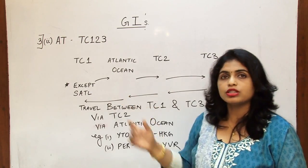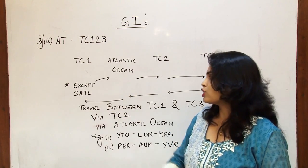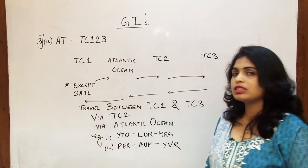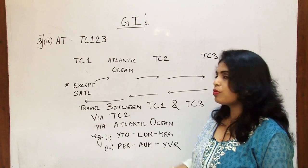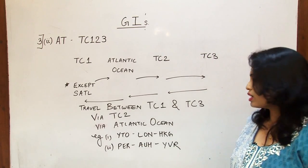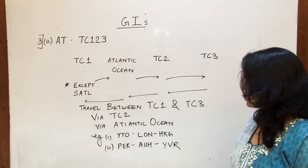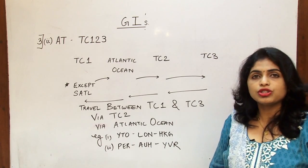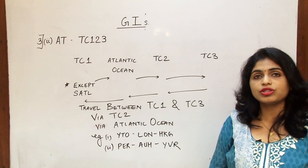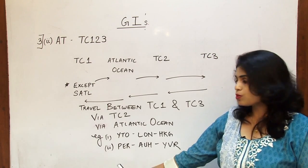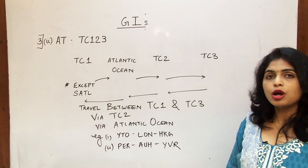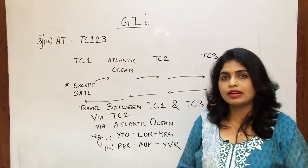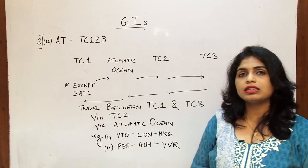So AT applies when traveling between TC1 and TC3 with a via point at TC2 and via the Atlantic Ocean. Examples here are Toronto (YTO, Canada, Area 1) to London (UK, Area 2) to Hong Kong (Area 3), and Perth (Australia, Area 3) to Abu Dhabi (Middle East, Area 2) to Vancouver (Canada, Area 1). In both cases the global indicator is AT and all three traffic conference areas are involved.